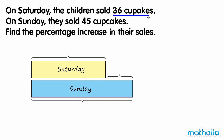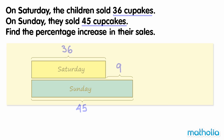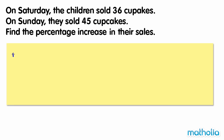We know they sold 36 cupcakes on Saturday and 45 cupcakes on Sunday. The difference in the number of cupcakes sold is 45 minus 36, which equals 9. To find the percentage increase in sales, let's first find the fraction increase, then convert it to a percentage.